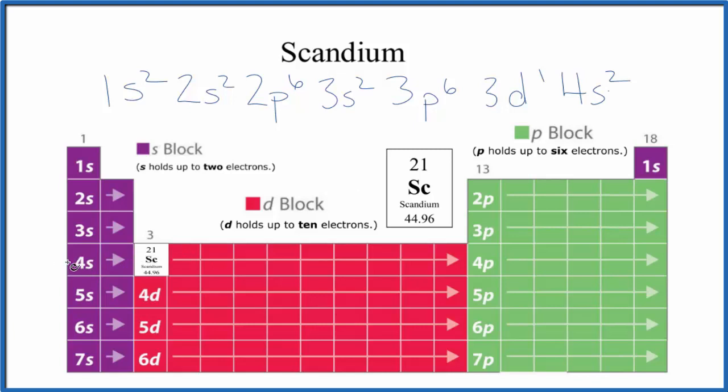That's back here, this would be argon. So we're going to put brackets Ar, and then we look at the configuration for argon - that would be just like this here. So instead of writing all this, we just write argon in brackets, and then we'll put this here after that.